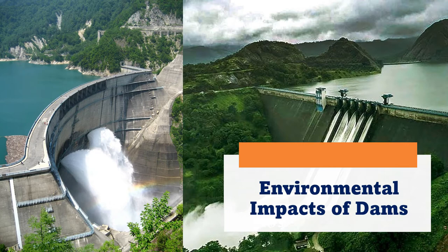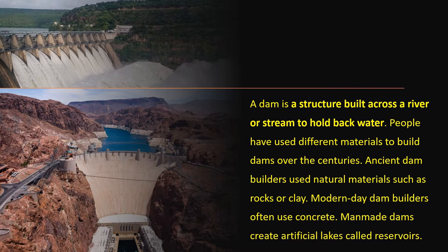Dams are helpful in achieving self-reliance and improving the standard of living. They were therefore described as 'Temples of Modern India' by Pandit Jawaharlal Nehru, the first Prime Minister of India. Dams are structures built across a river or stream to hold back water. People have used different materials to build dams over the centuries — ancient dam builders used natural materials such as rocks or clay, while modern dams are more often built using concrete.